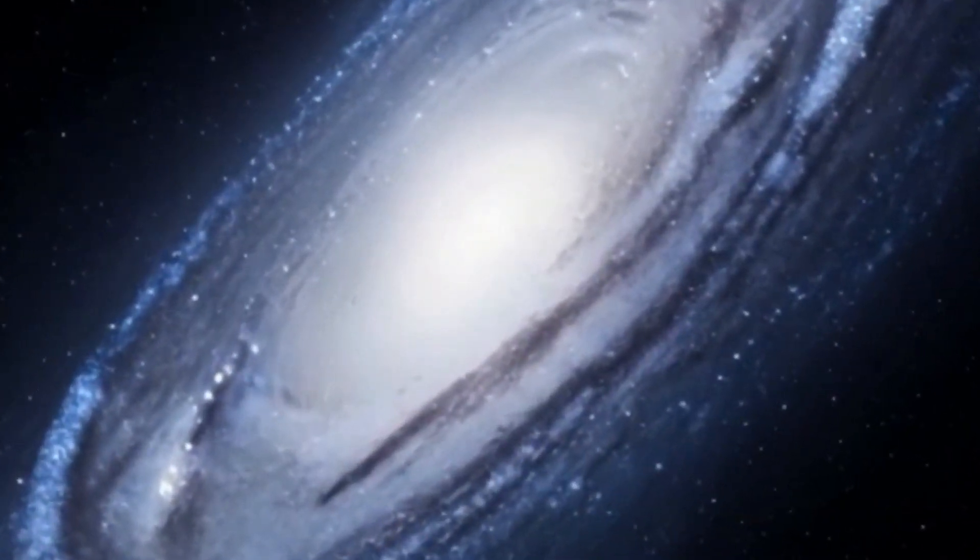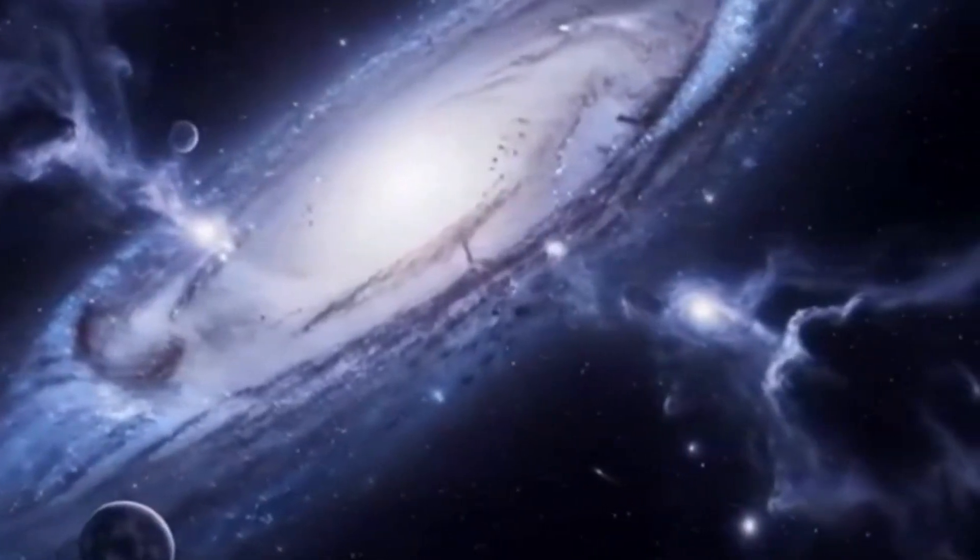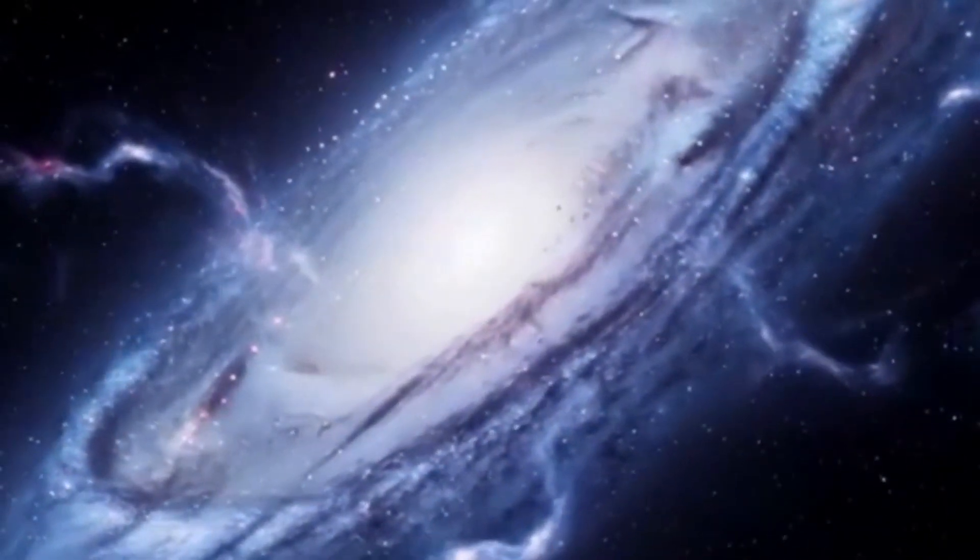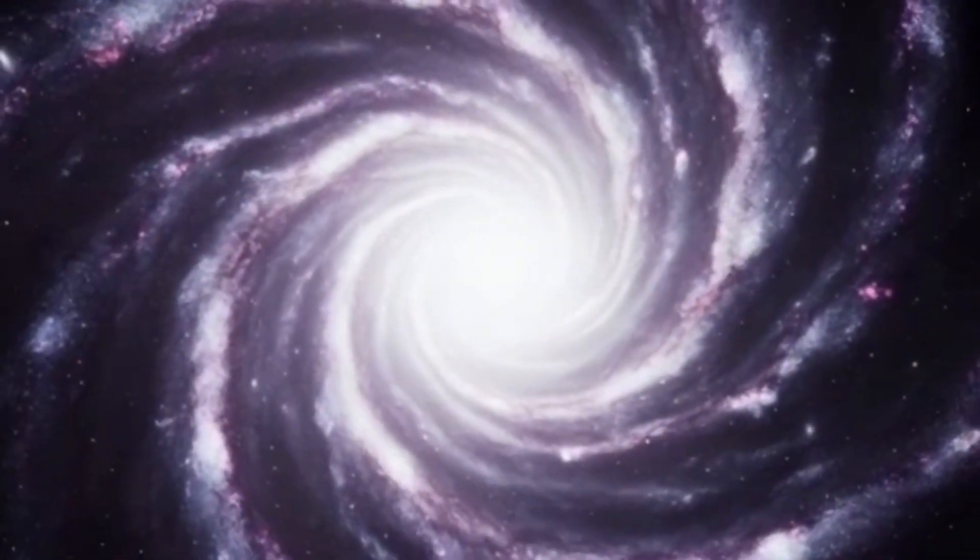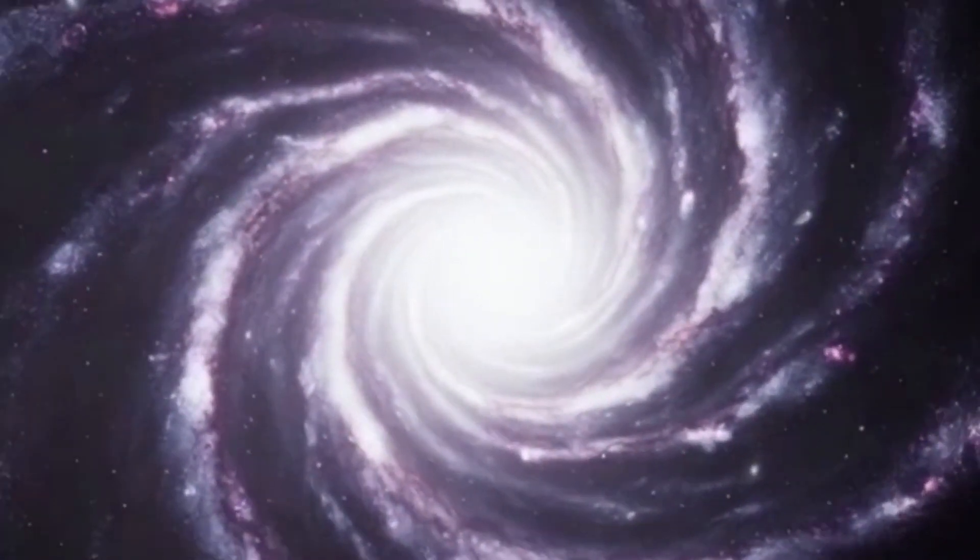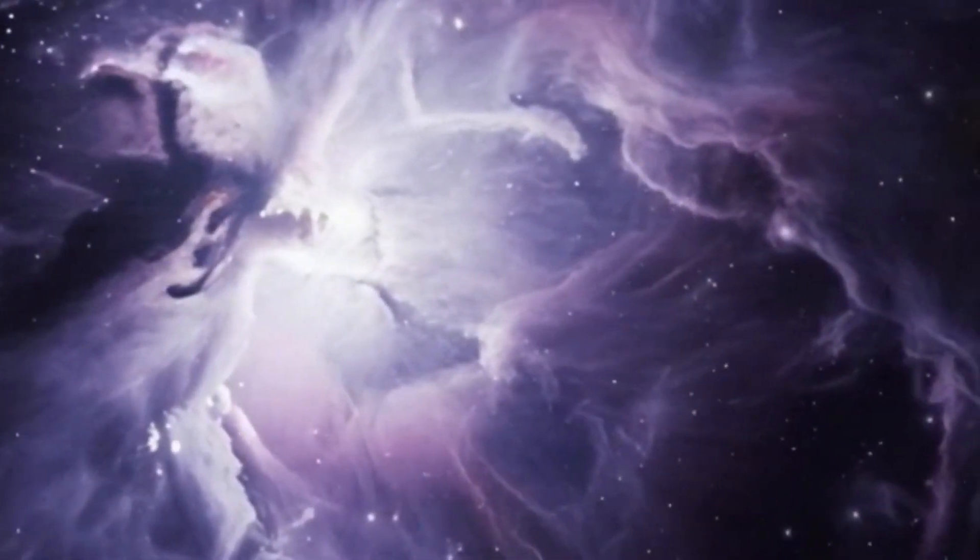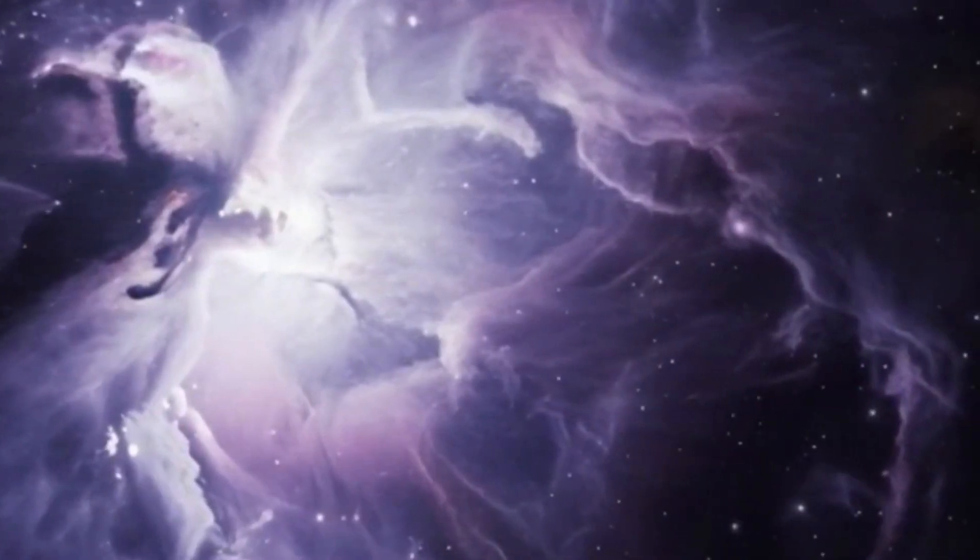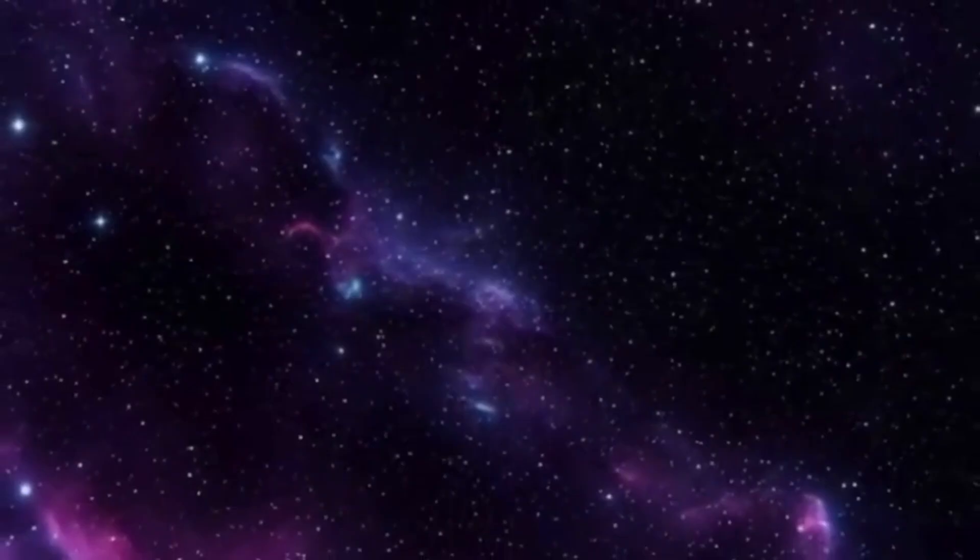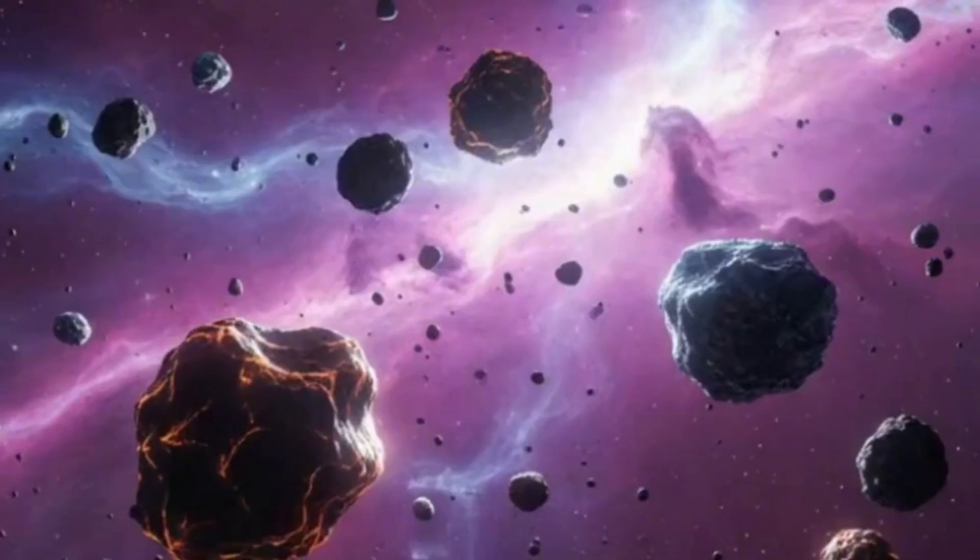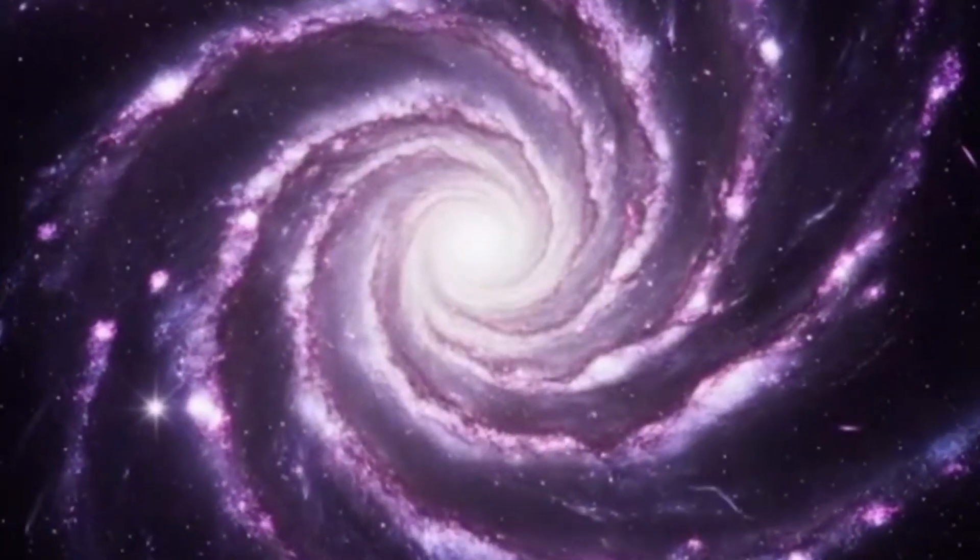If these galaxies are real, then by our current theories, they shouldn't exist at all. There simply wasn't enough time or matter for so many massive structures to form so quickly. Think about it. To produce these galaxies, almost all of the ordinary matter in the universe would have needed to collapse into stars in record time. That's not just unlikely, it's impossible under our current physics. And just when scientists thought the mystery couldn't get any deeper, Webb found something else.